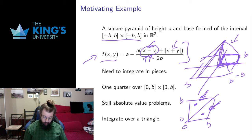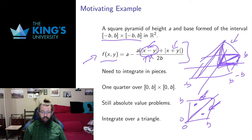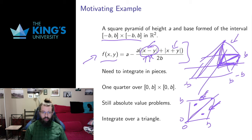So I want to talk about how I'm going to integrate over a triangle. If I integrate over a triangle, since this is symmetric, if I look at one half of this I'll get one half — and one half of one quarter is one eighth. So if I integrate over the triangle and multiply by eight, I'll get the entire volume of the pyramid.